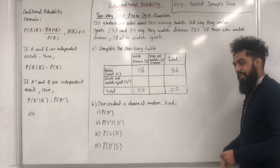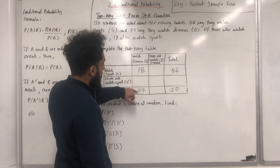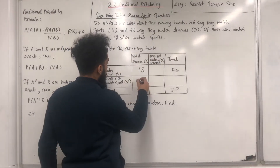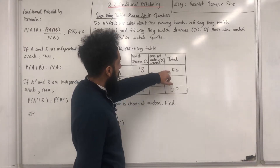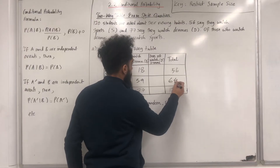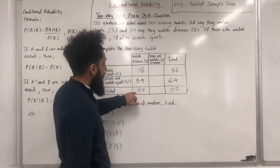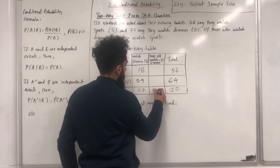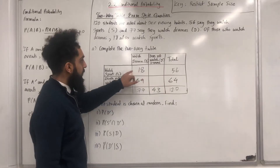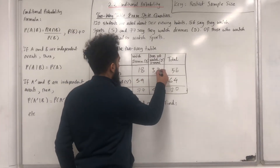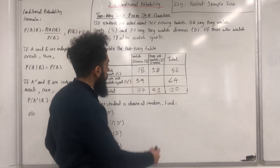Now I finish off the two-way table. Seventy-seven take away 18 gives fifty-nine. 120 take away 56 gives sixty-four. 120 take away 77 gives forty-three. 56 take away 18 gives thirty-eight. And finally, 64 take away 59 gives five. That completes the two-way table.